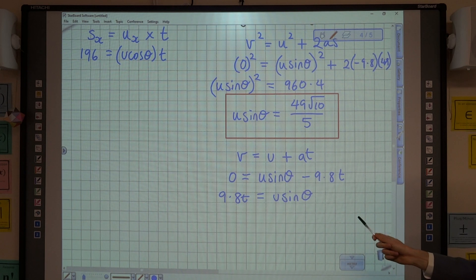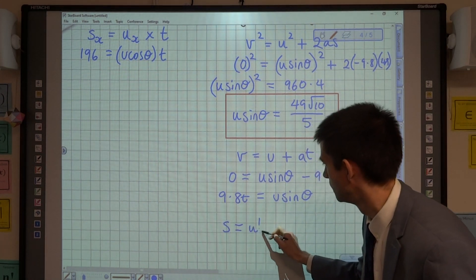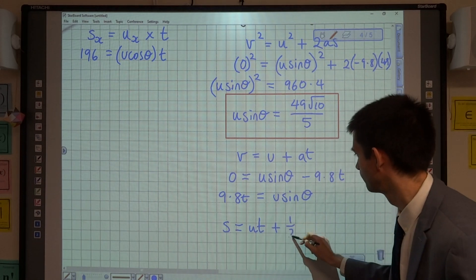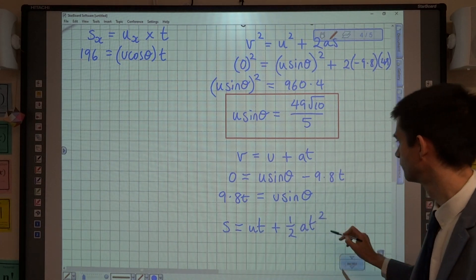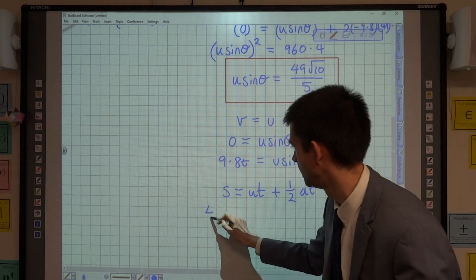Final one then, vertically, we're going to use s equals ut plus a half at squared. We know the vertical displacement is 49.